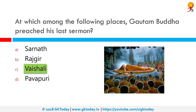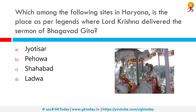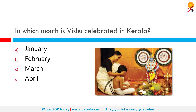Buddha informed his disciples about his impending Mahaparinirvana and his desire to go to Kushinagar. Which among the following sites in Haryana is the place where, as per legends, Lord Krishna delivered the sermon of the Bhagavad Gita? Jyotisar is a town on Bhiwani Road in Kurukshetra district of Haryana. It is at this place where Krishna delivered the Bhagavad Gita to Arjuna to remove his confusion and dilemma and prepare him to face warriors like Bhishma and Karna in the Mahabharata war.